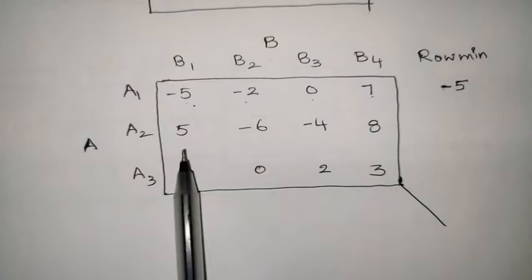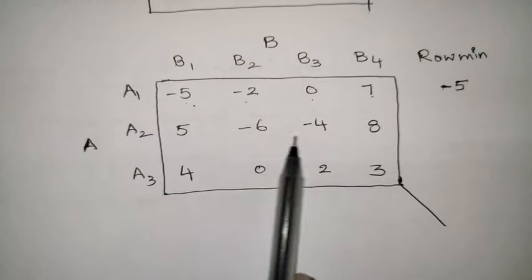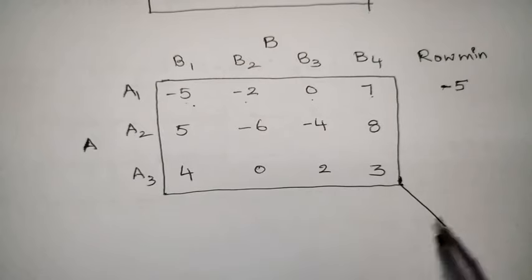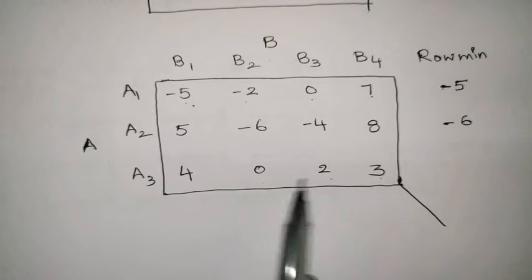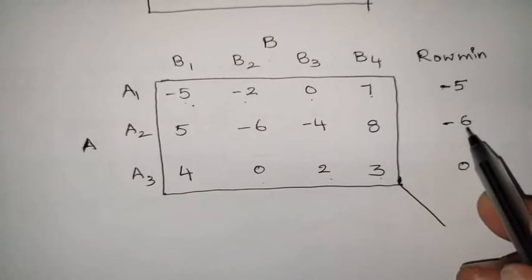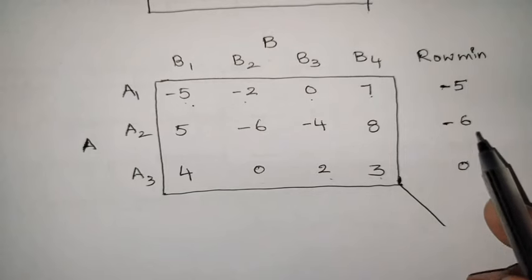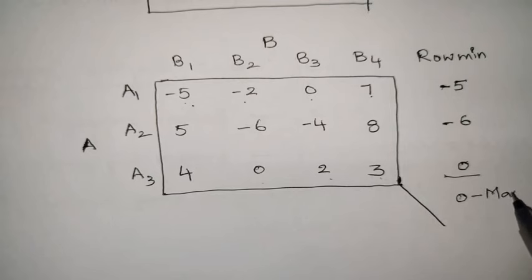Next, take the second row. The values are 5, minus 6, minus 4, 8. The minimum value is minus 6. Now take the third row. The values are 4, 0, 2, 3. The minimum value is 0. These are the three row minimum values. In these three row minimum values, the maximum value is 0. So this 0 becomes the maximin value.